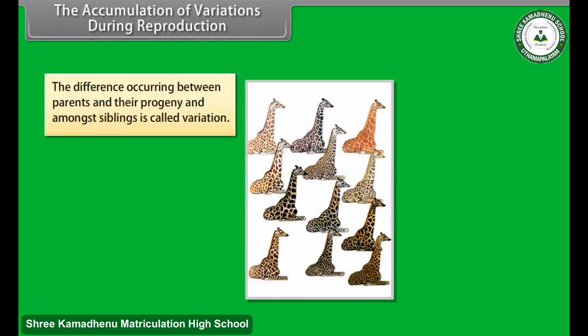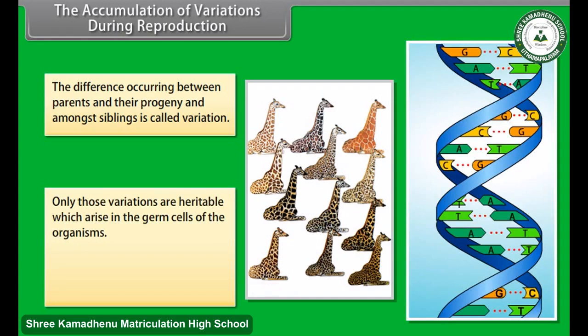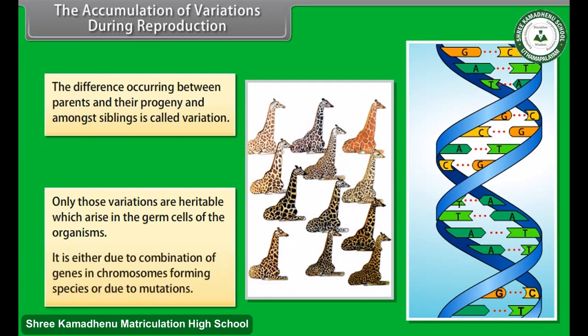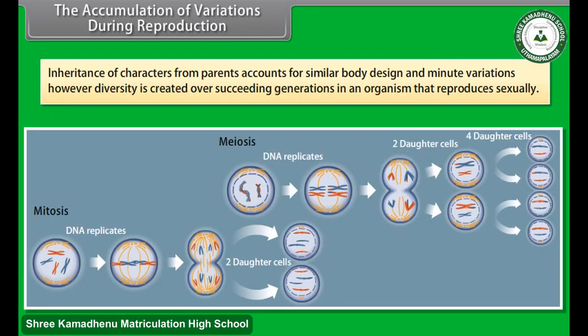The accumulation of variations during reproduction: The difference occurring between parents and their progeny and amongst siblings is called a variation. Only those variations are heritable which arise in the germ cells of the organisms — either due to combination of genes in chromosomes forming species, or due to mutations.